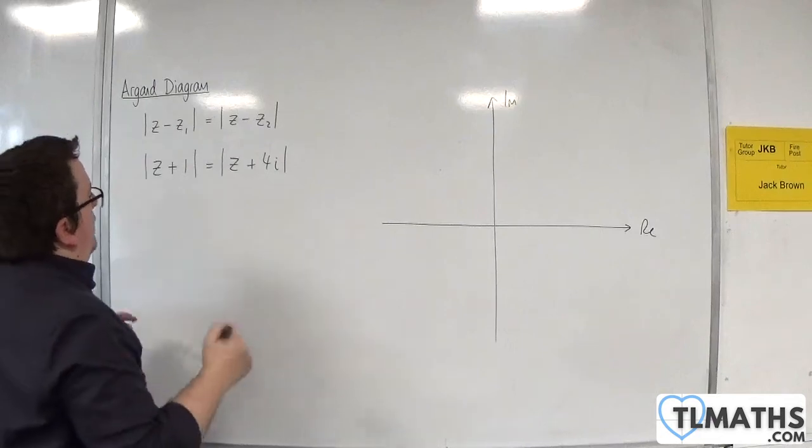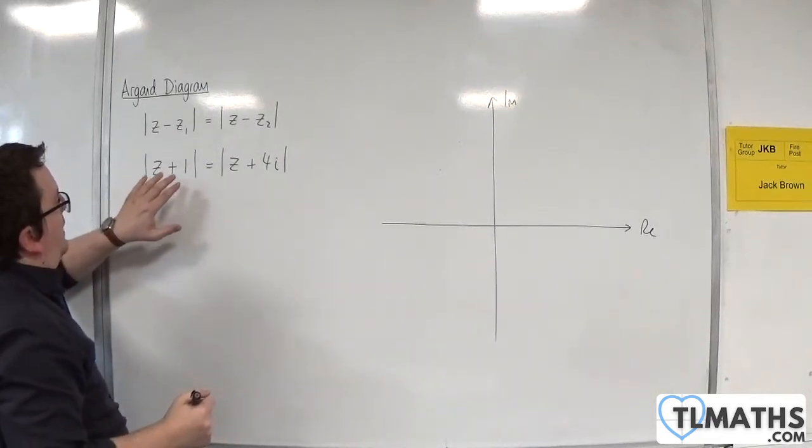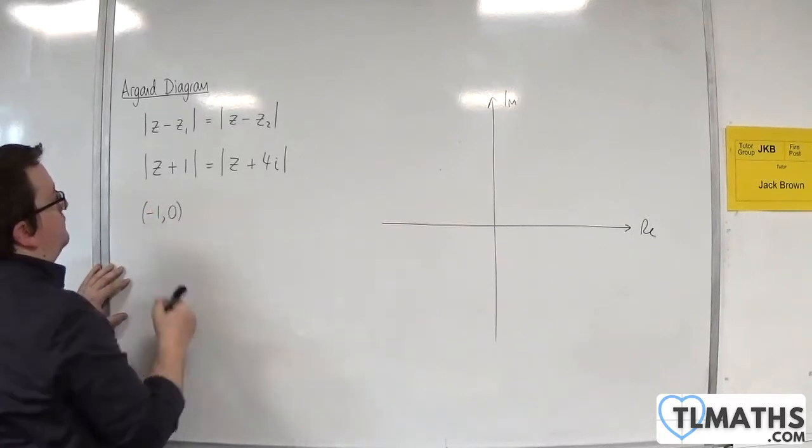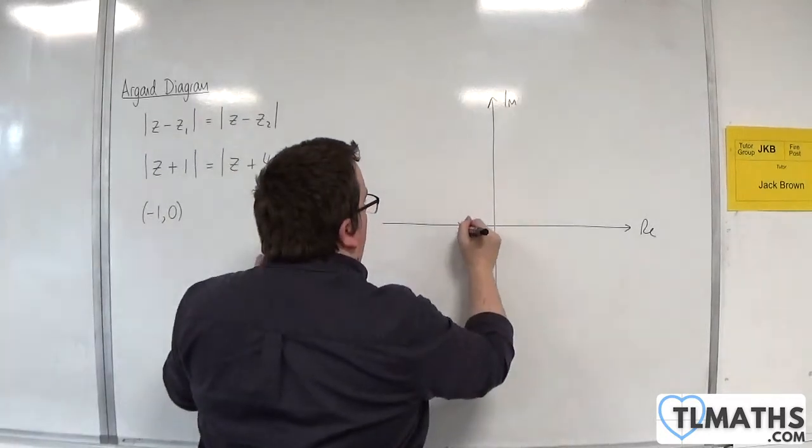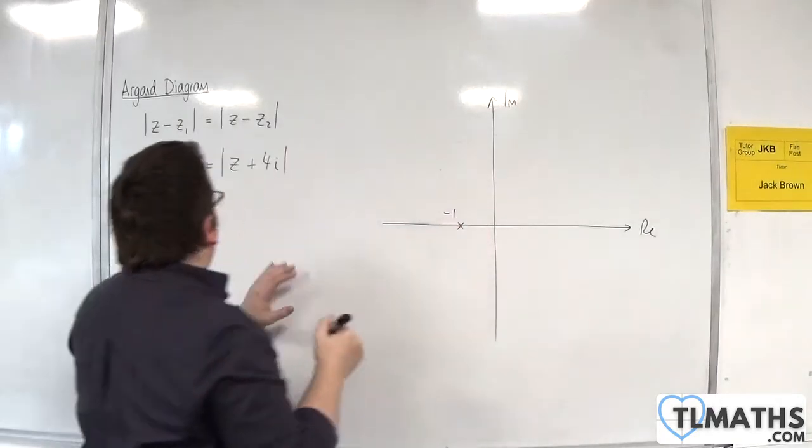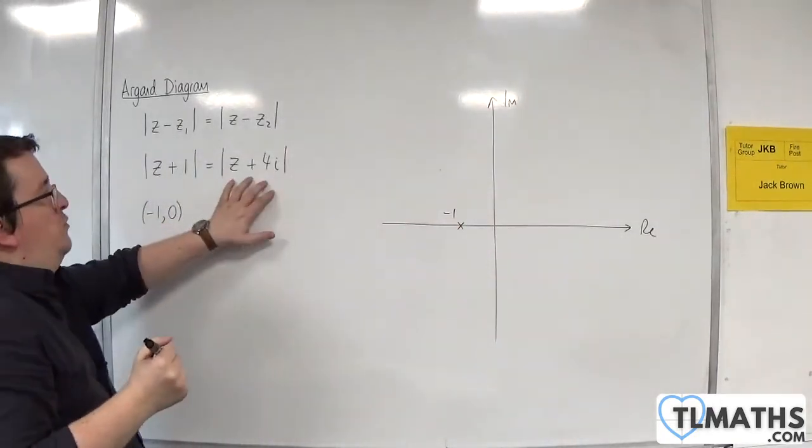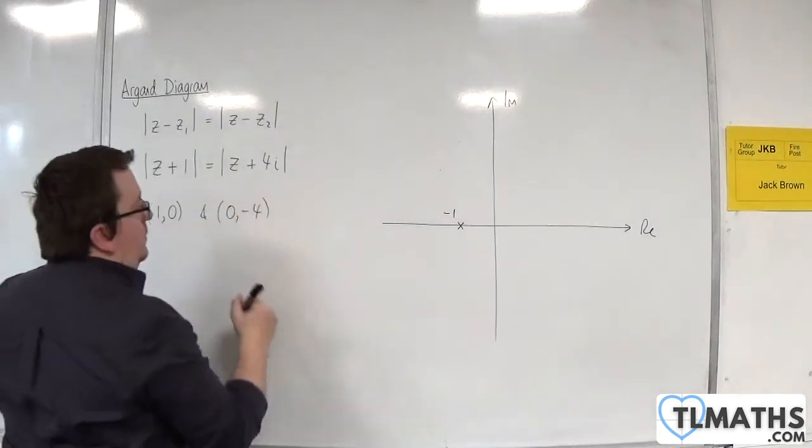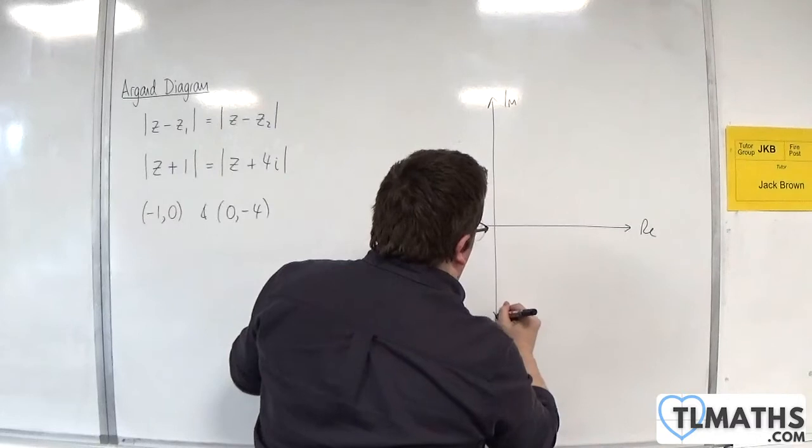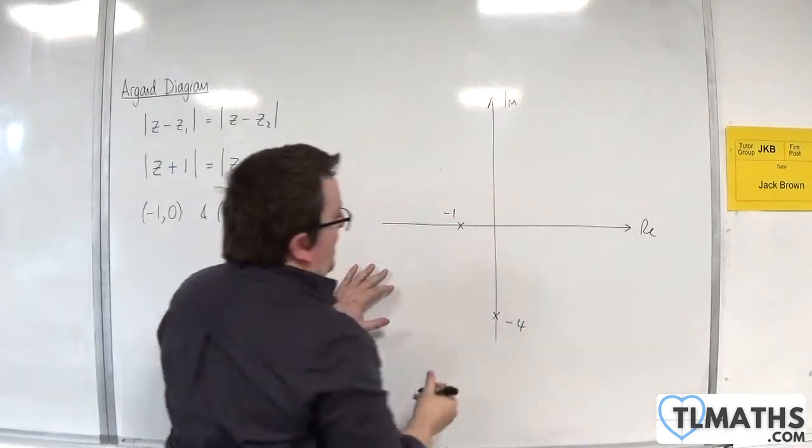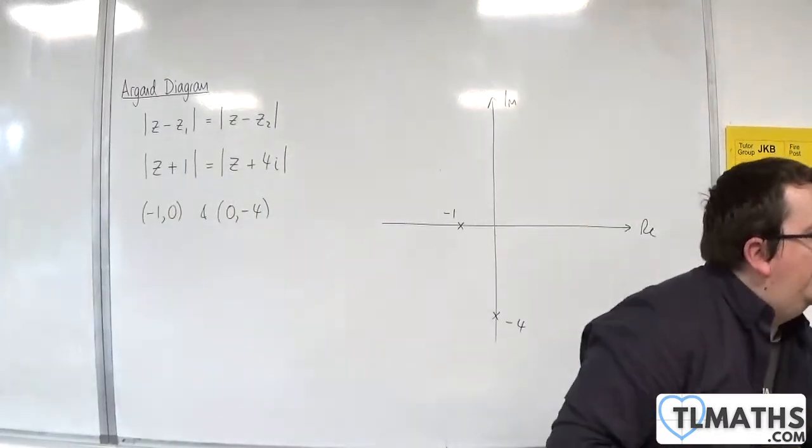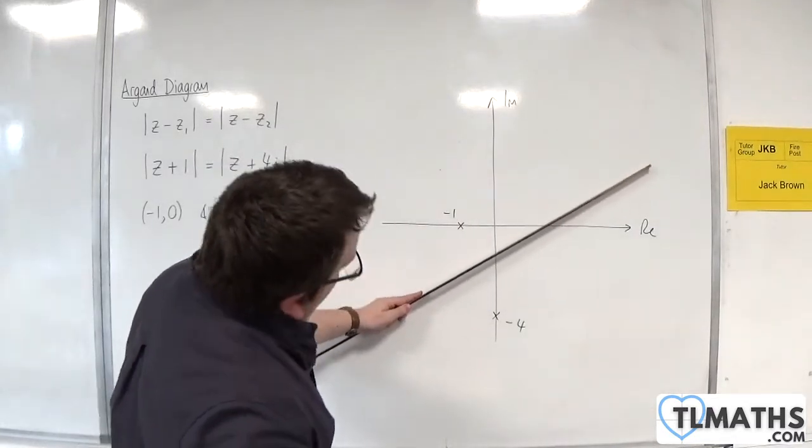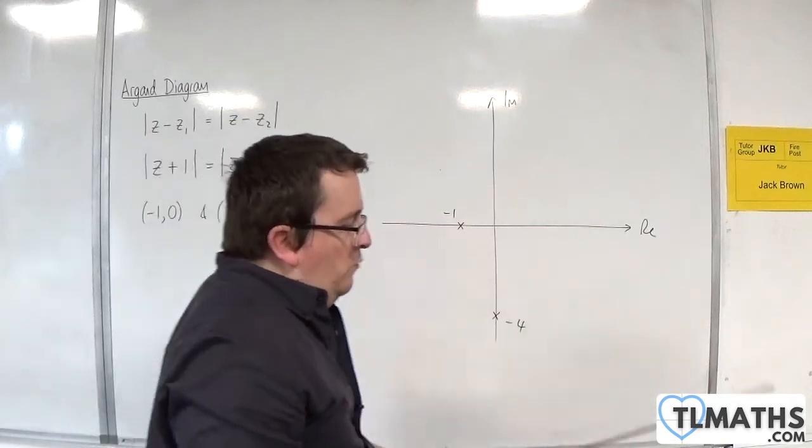What I'm trying to do is I'm finding the perpendicular bisector between (-1, 0) and (0, -4). So here's -1, and 0, -4 somewhere down here. So the perpendicular bisector is going to look something like that.